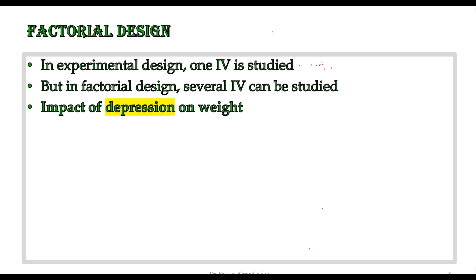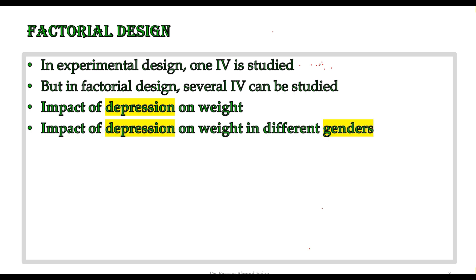If we want to convert this topic into a factorial design topic, we have to introduce another independent variable. The new topic becomes 'impact of depression on weight in different genders.' I have introduced gender as another independent variable, with two categories — male and female — making this a factorial design topic.